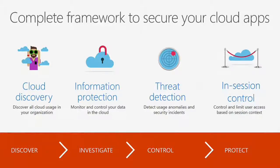Microsoft Cloud App Security is a complete framework to secure your cloud apps on top of Azure Active Directory. The first element is cloud discovery — discover all cloud usage in your organization by importing router logs into the Cloud App Security environment, and it will tell you where people are going. Then there's information protection, where you can monitor and control your data in the cloud — documents people are putting in Dropbox and elsewhere — protecting that information wherever it resides.